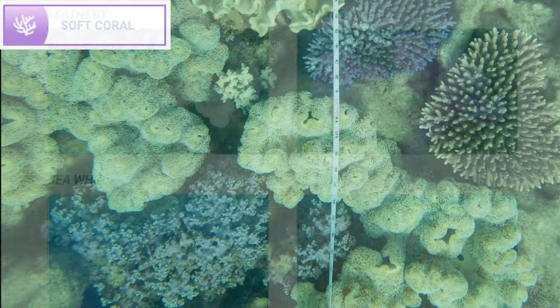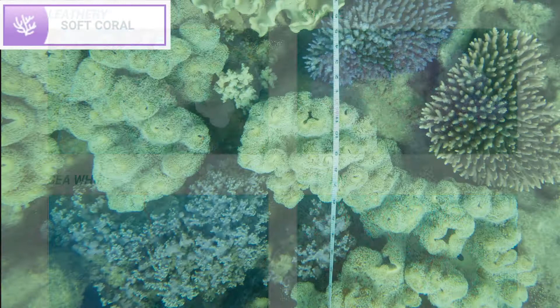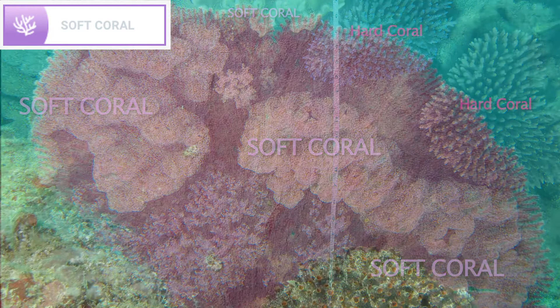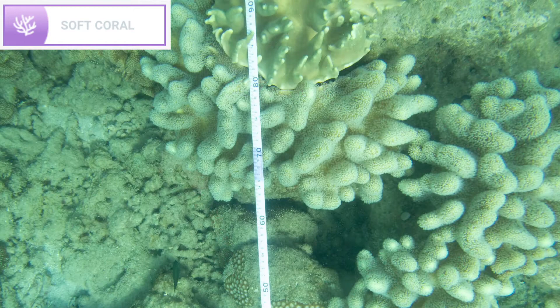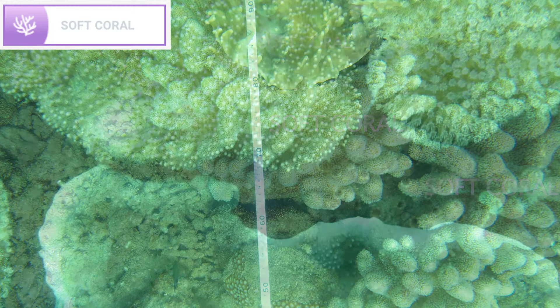Soft corals are described as undersea wildflowers because of their bright colors and their resemblance to plants, often forming fields on the seabed and outer reef slopes. They can come in vibrant shades of yellow, pink, red, purple, and orange. Like their name suggests, they have soft tissue-like bodies which are flexible — either soft and squishy or firm and leathery. Contrary to hard corals, soft corals are non-reef builders. Here are several examples of common soft corals.